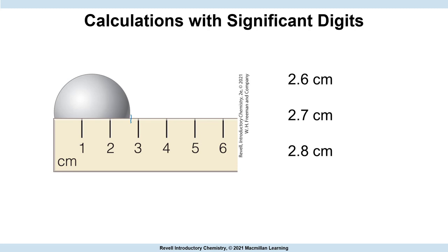Let's look at an example. We're going to look at the diameter of a ball bearing. You look at it and say maybe it's 2.7 — that looks about right. But remember, we're not quite sure about that last digit. There's uncertainty in that last digit, and that's why we can only express our number to two sig figs, two significant figures or digits. Unless we specify otherwise, it's plus or minus 1 in this last digit that we express.